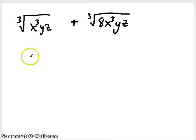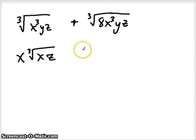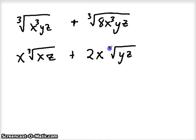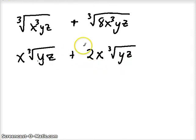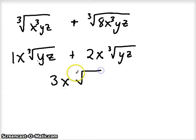For the second term: 8 is a perfect cube (2 times 2 times 2), so I take out a 2. x cubed is another perfect cube, so I take out an x. y and z stay inside. So the second term becomes 2x times the cube root of yz. Now I have the same radicand and the same index. I can add their coefficients: 1x plus 2x gives 3x. My final answer is 3x times the cube root of yz.